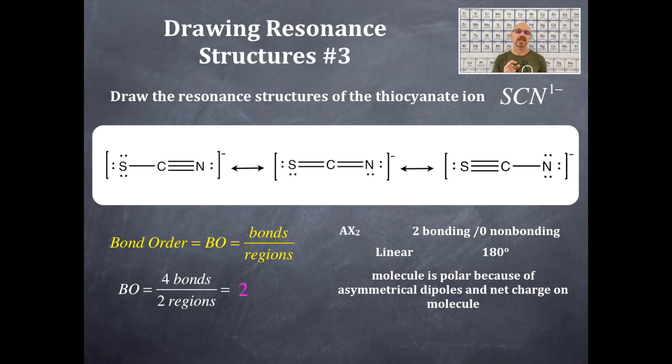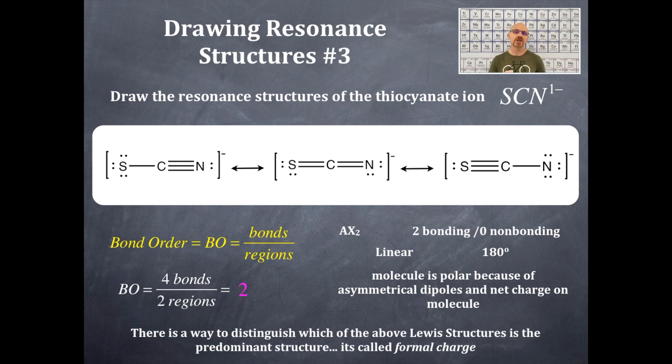There is a difference between each one of these resonance structures. There's a way to distinguish these resonance structures, and that is called formal charge. That's beyond the scope of this class, so you're going to have to watch some of my other videos for advanced placement chemistry, which cover formal charge. That is a way to distinguish which one of these three resonance structures is the predominant resonance structure via formal charge.